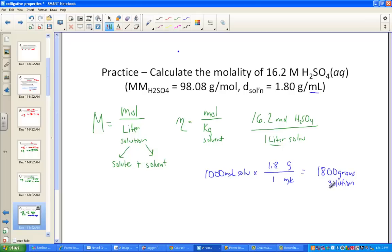The solution is made of two parts: the solute and the solvent. How many grams of this acid are contained in 16.2 moles? We have to subtract that out from the 1800 grams total. We have some mole map work to do. The 16.2 moles of the aqueous acid, H2SO4, and that's why they provided the molar mass. There's 98.08 grams of acid in every one mole.